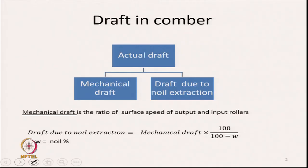Mechanical draft is the ratio of the surface speeds of the output and input rollers. The draft due to noil extraction is the mechanical draft multiplied by 100 divided by (100 minus W), where W is the noil percentage.